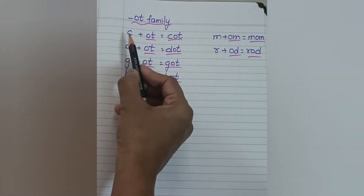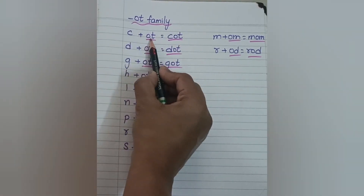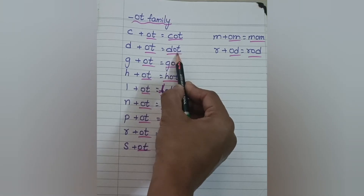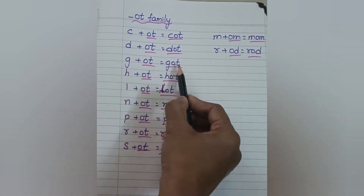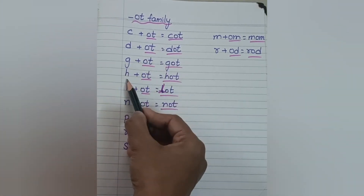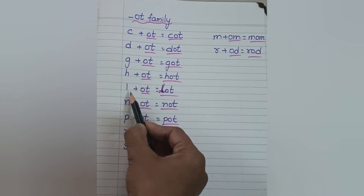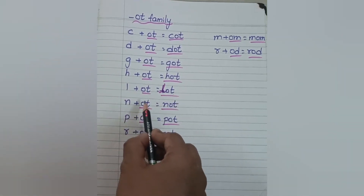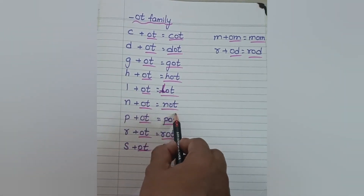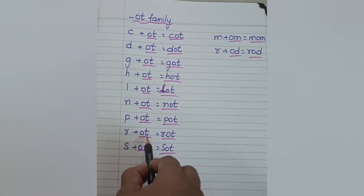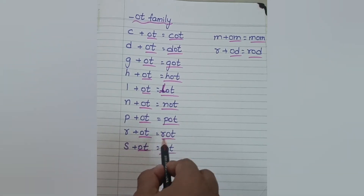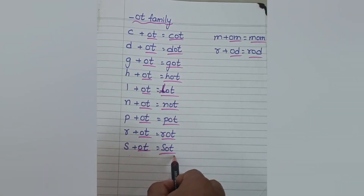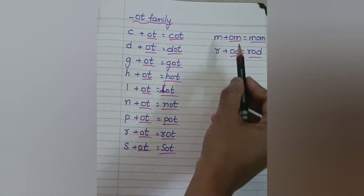And the next family is OT family. K, OT — cot. D, OT — dot. G, OT — got. H, OT — hot. L, OT — lot. N, OT — not. R, OT — rot. S, OT — sot.